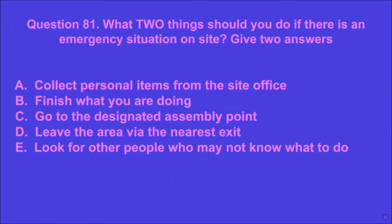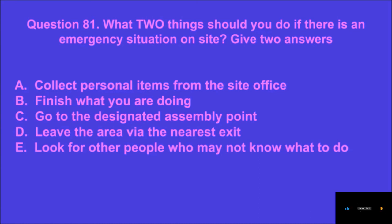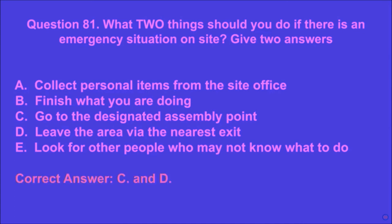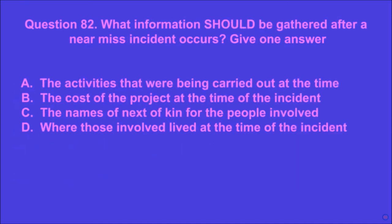Question 81: What two things should you do if there is an emergency situation on site? Give two answers. A: collect personal items from the site office, B: finish what you are doing, C: go to the designated assembly point, D: leave the area via the nearest exit, E: look for other people who may not know what to do. C and D are the correct answers.